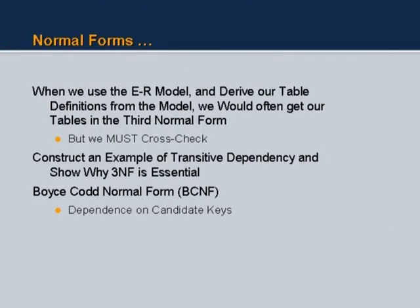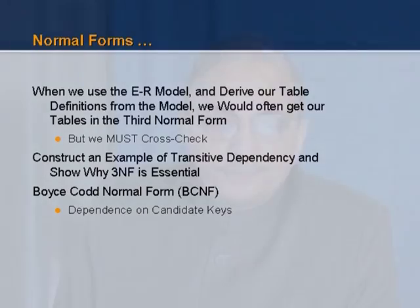A lossless decomposition must be ensured, meaning we must be able to get back the original information through joins. If I have these three tables — which are projections of the original — and I join them together appropriately, I must get back the original table. Loss of information does not necessarily mean dropping of some information; adding spurious information also constitutes loss. Please note that when we use the ER model and derive table definitions from that model, we would often get our tables in third normal form, but we must cross-check.